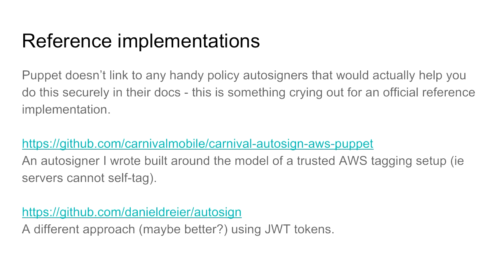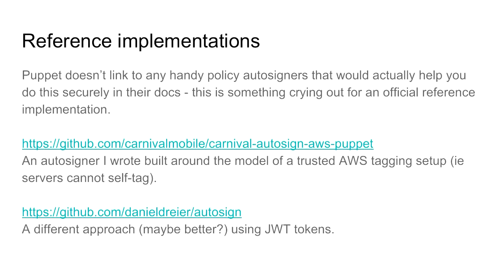We wrote one for our environment that relies on the trustworthiness of the Amazon APIs — specifically that servers can't set their own tags. There are other approaches: I've linked to one another person wrote around just-in-time web tokens, and I've even seen implementations written in Bash. Depending on your preference, there's definitely something out there.